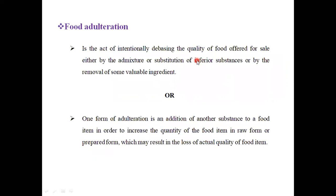Now we will see the proper definition of food adulteration. It is an act of intentionally debasing the quality of food offered for sale either by admixture or substitution of inferior substances or by the removal of some valuable ingredient. Here we are intentionally adding or dispersing the quality of food products which are used for sale, mixing or making substitution of the main food product with inferior substances.